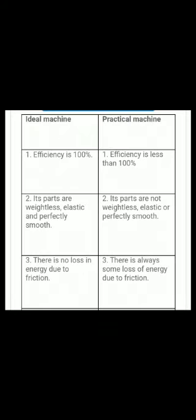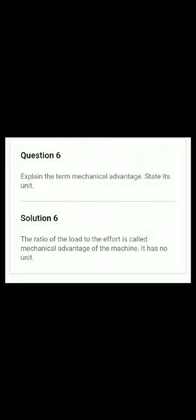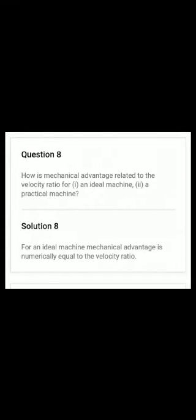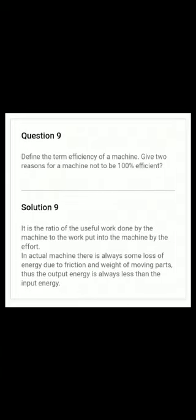Question number five: what is the difference between an ideal and practical machine? That difference is given here. Question number six: explain the term mechanical advantage and state its units — it's already given in the book. Question number seven: define velocity ratio — it is unit-less. Question number eight: how is mechanical advantage related to velocity ratio for an ideal machine and a practical machine? For an ideal machine, mechanical advantage is numerically equal to the velocity ratio.